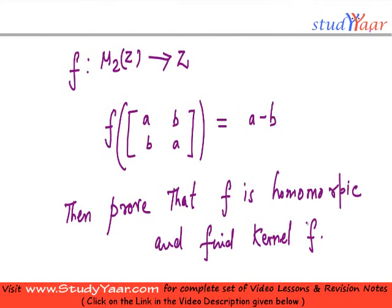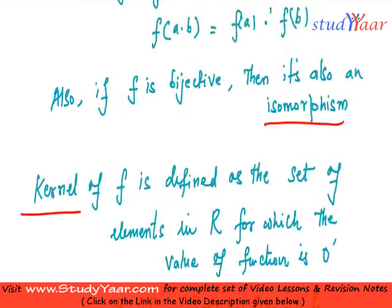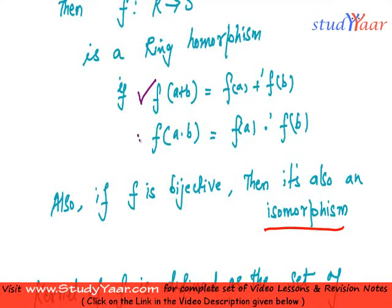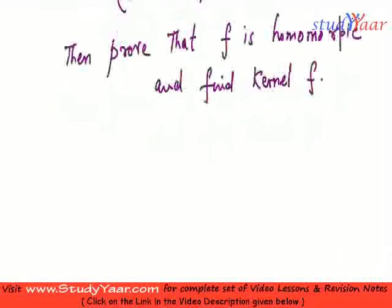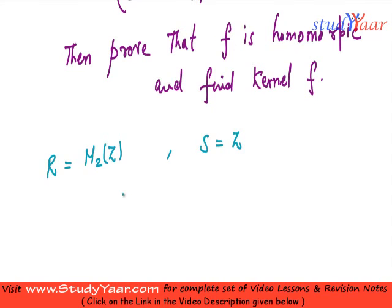Since we are talking about homomorphism we would have to show that both these properties are true. What is my R? My R is M₂(Z) which is the set of all 2 by 2 matrices having elements as integers. What is S? S is equal to Z and we are talking about normal plus like normal addition and subtraction.